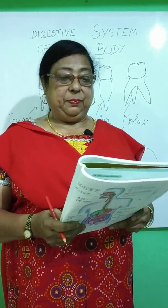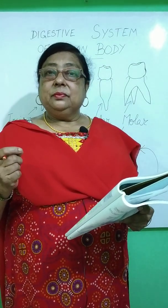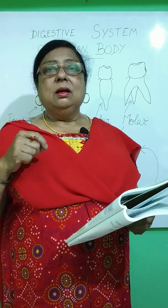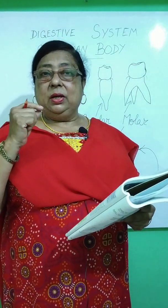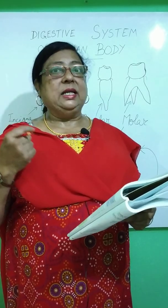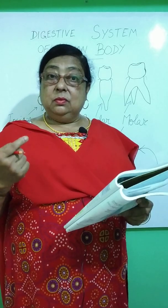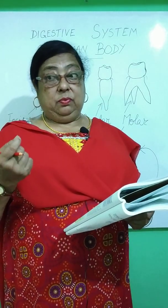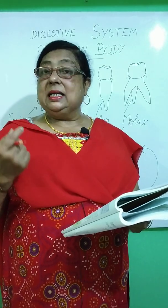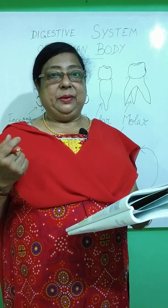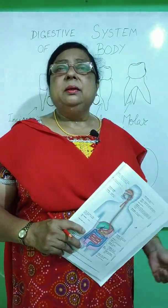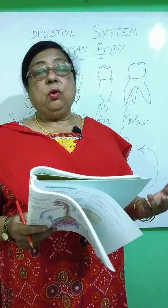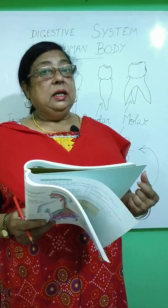If we neglect our teeth, the enamel erodes and tooth decay, holes, or pyorrhea can occur. The enamel gets eroded by acidic and sour substances in our food, and also by sticky foods like noodles, burgers, and chocolates.